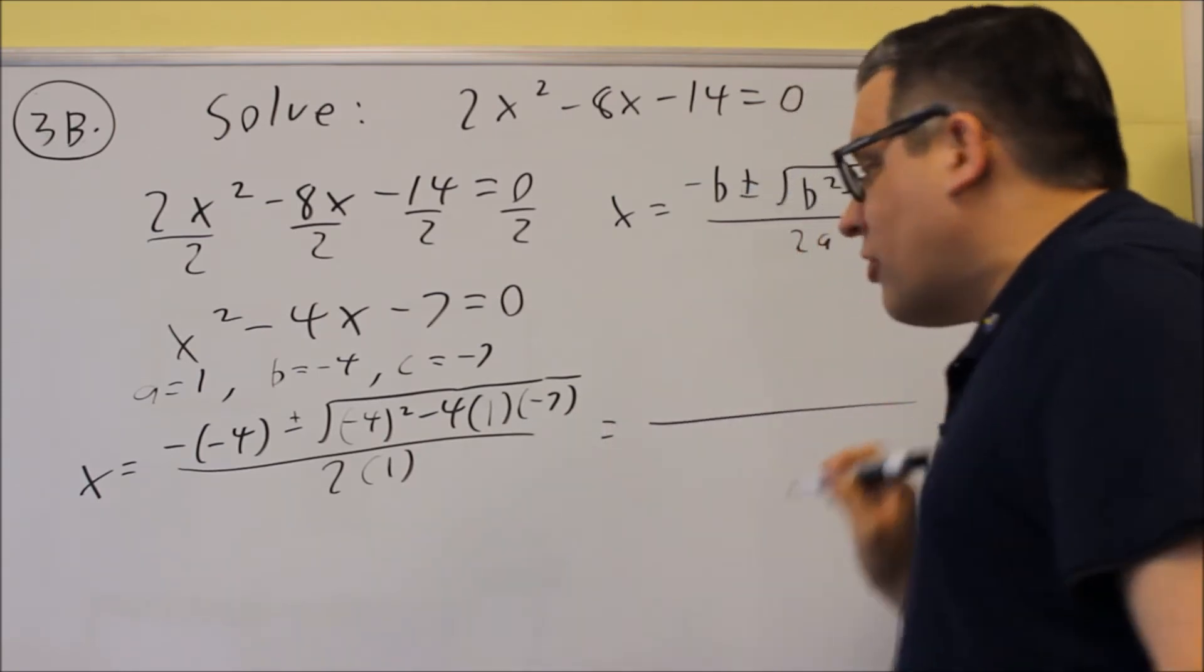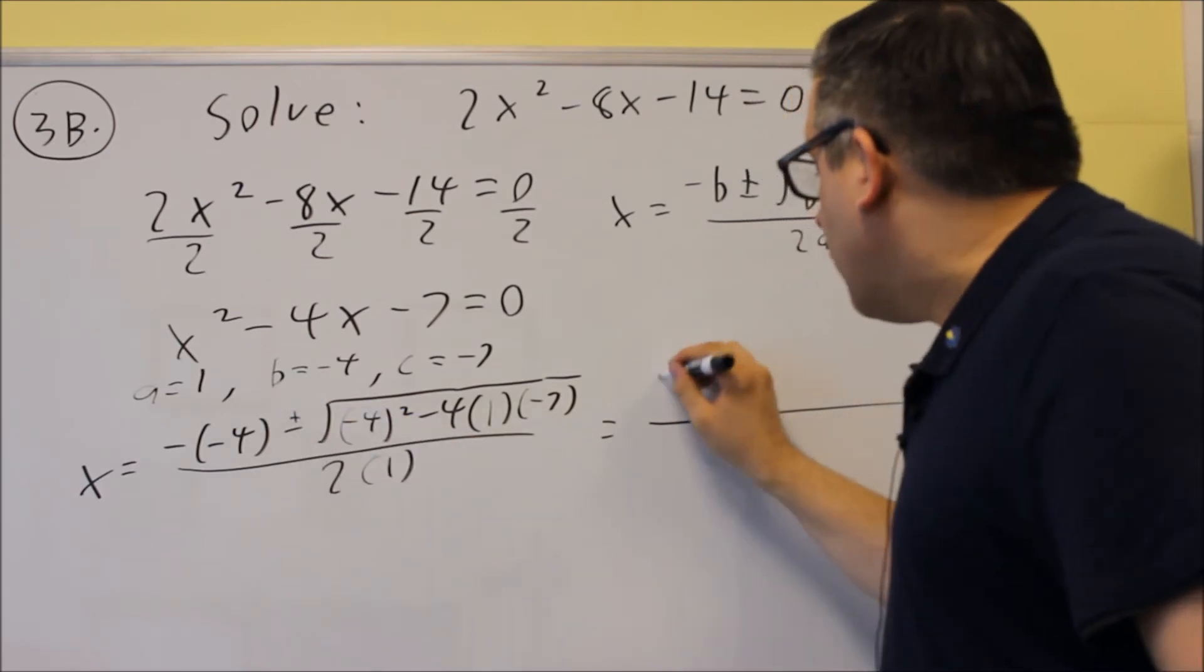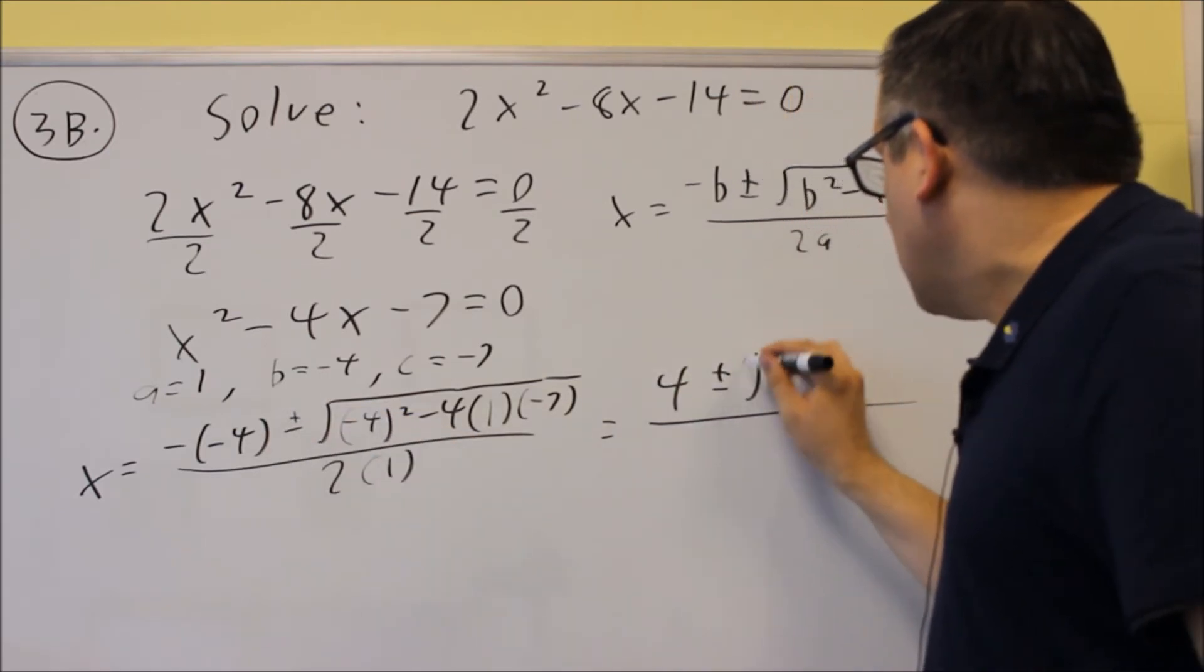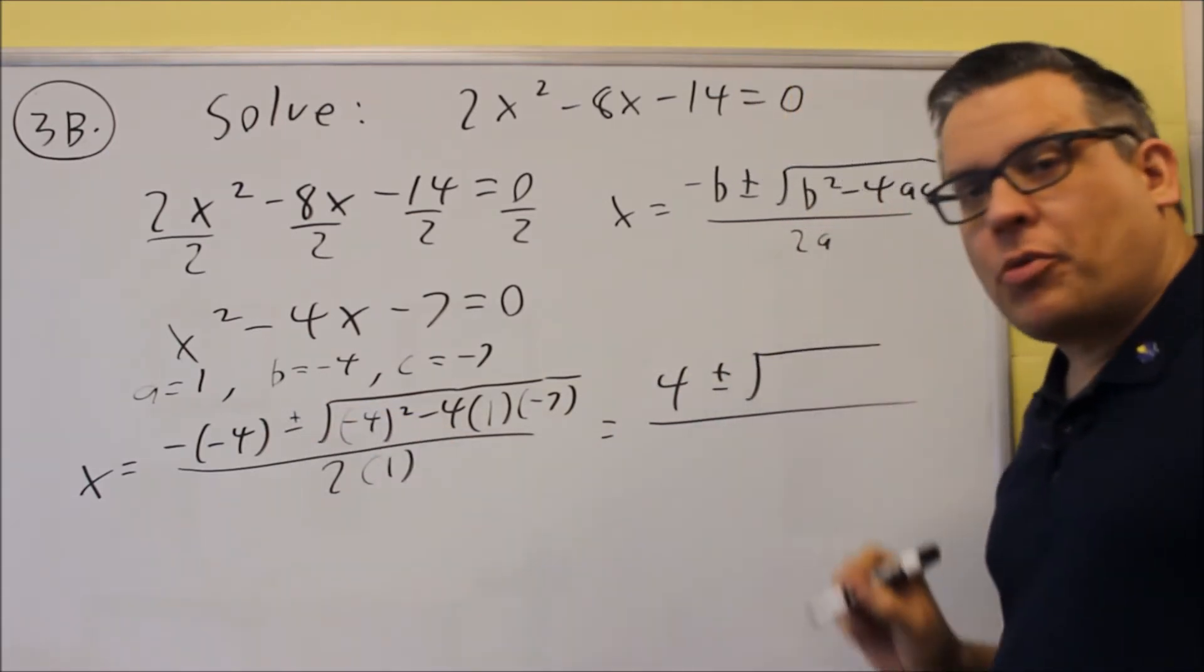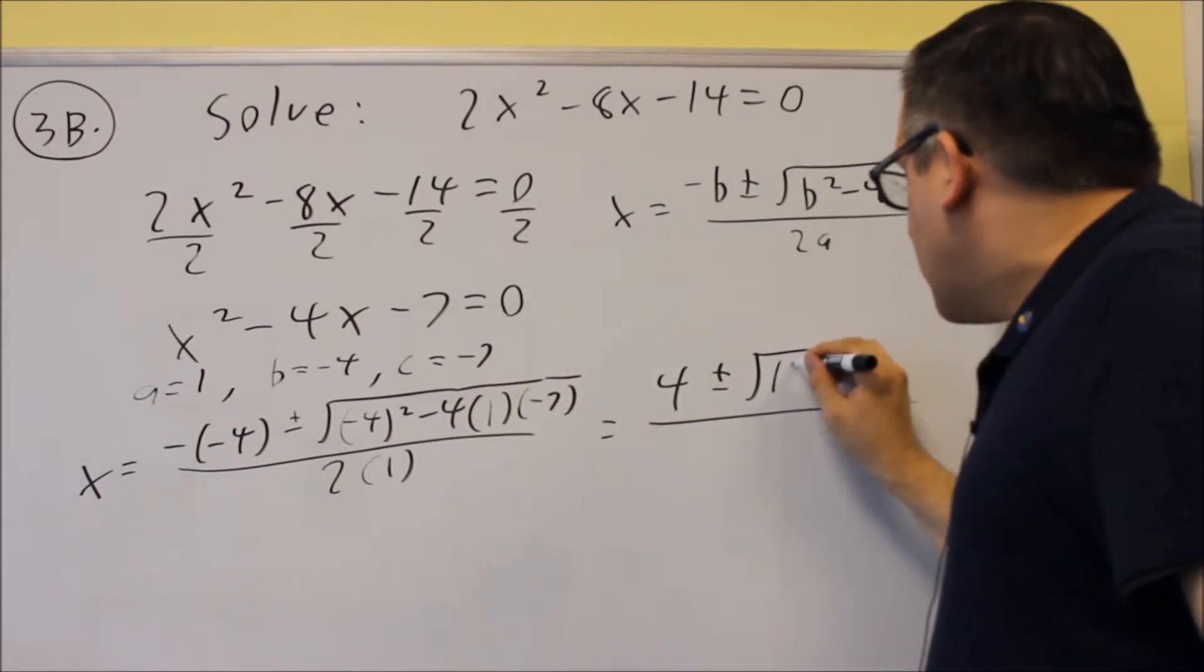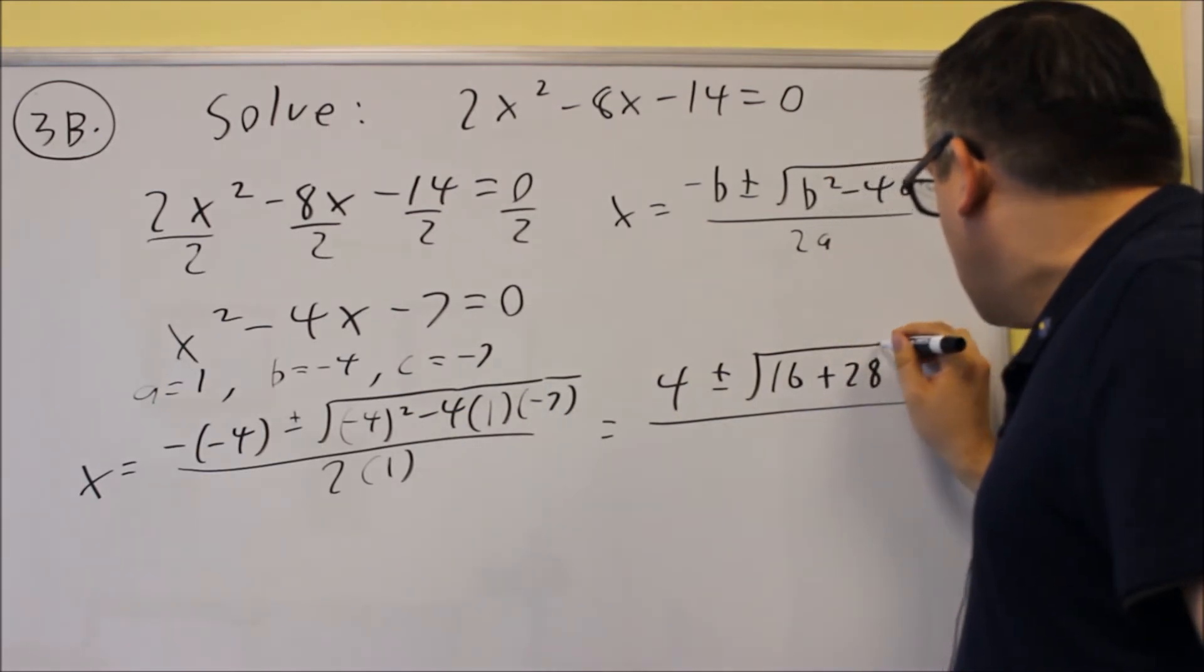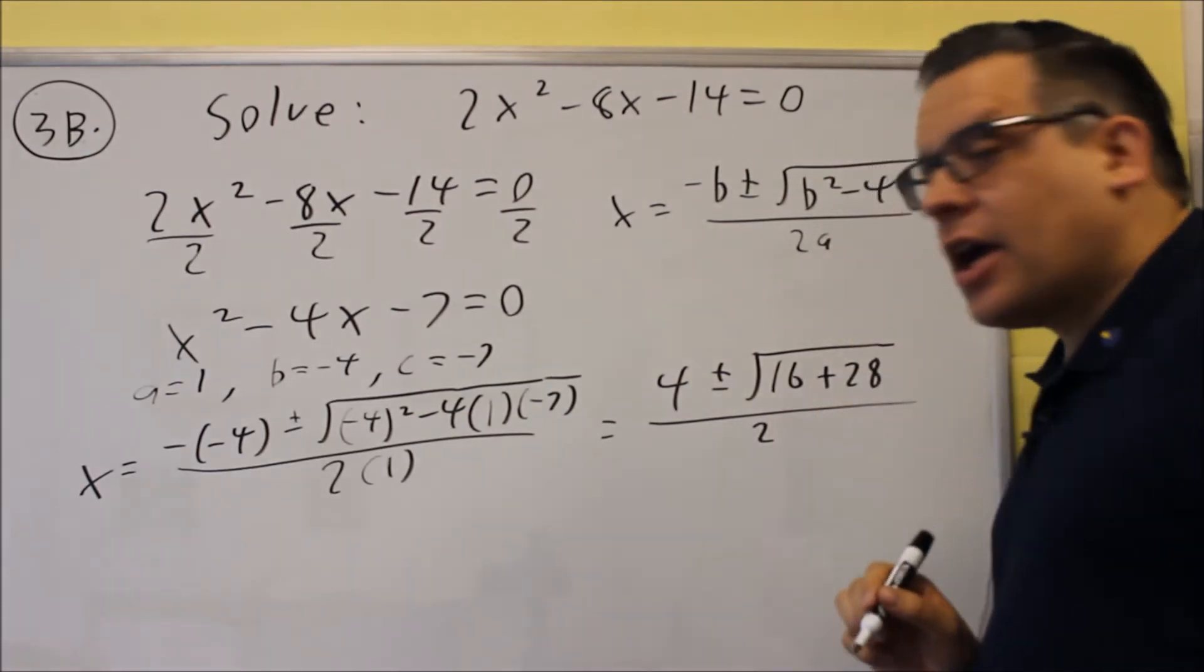Now we're going to try and simplify this down as much as possible. Okay, so negative negative will give you a positive 4. You have plus or minus as part of the formula. Now inside, we want to do this. We get 16 from that one. 2 negatives gives you a plus 28, and that's divided by 2.